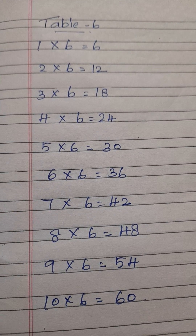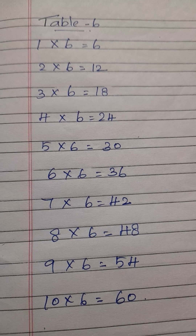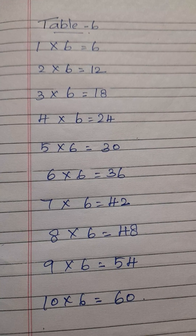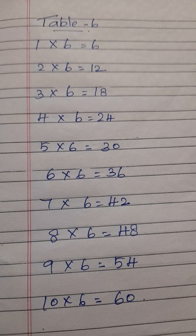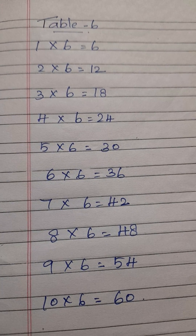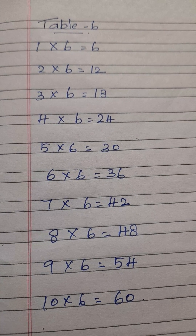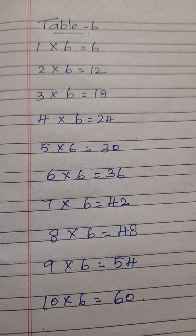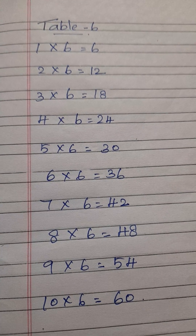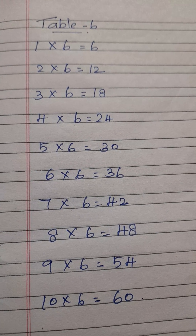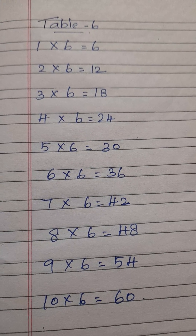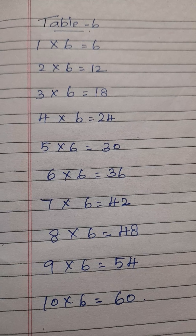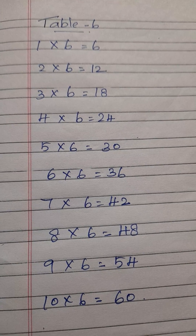Table 6. 1×6 is 6. 2×6 are 12. 3×6 are 18. 4×6 are 24. 5×6 are 30.